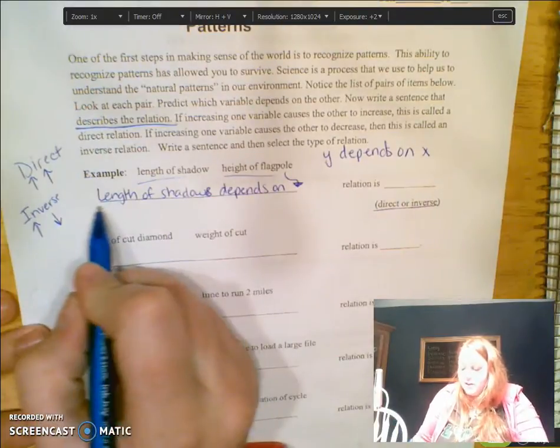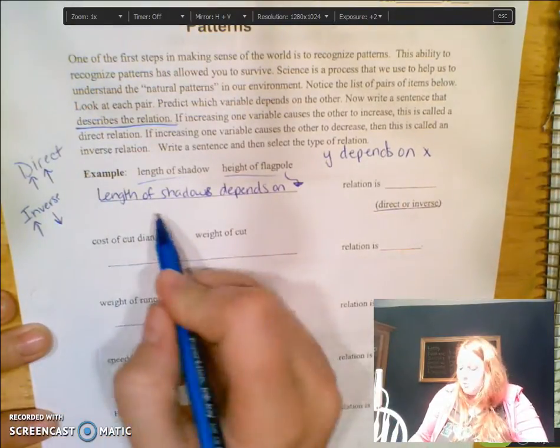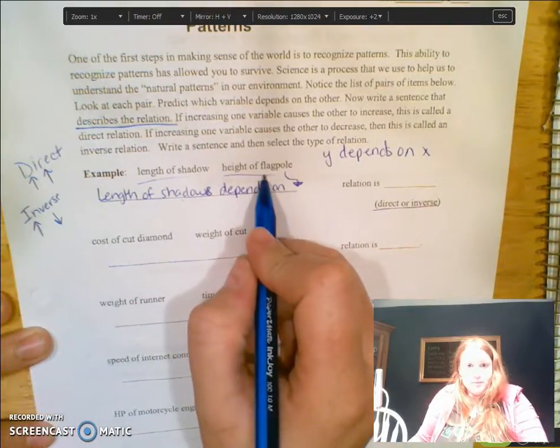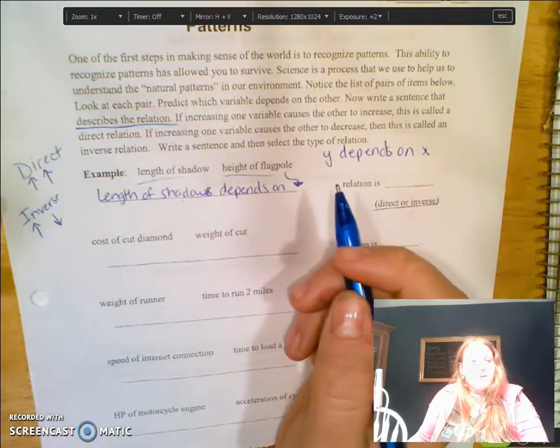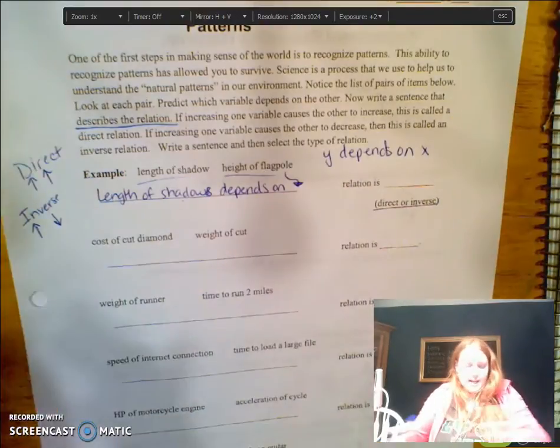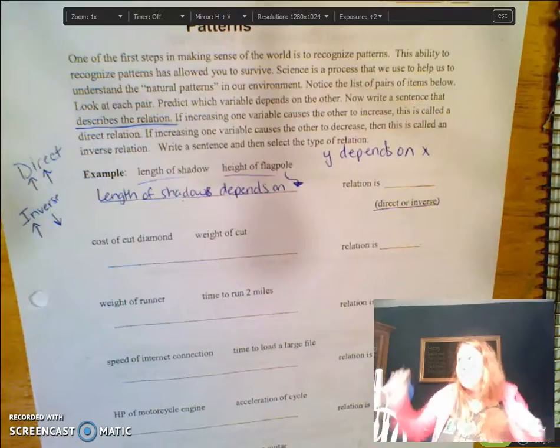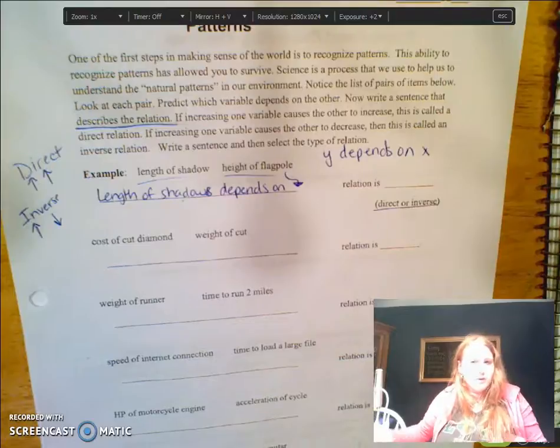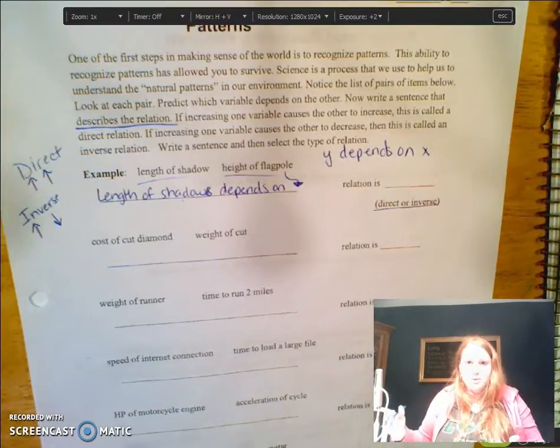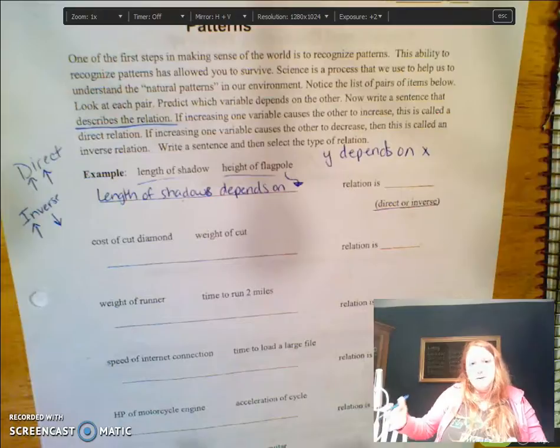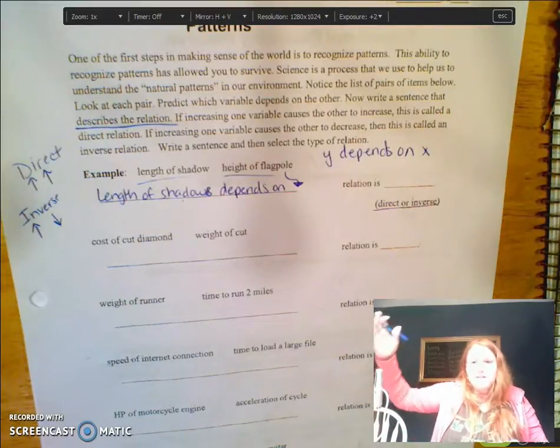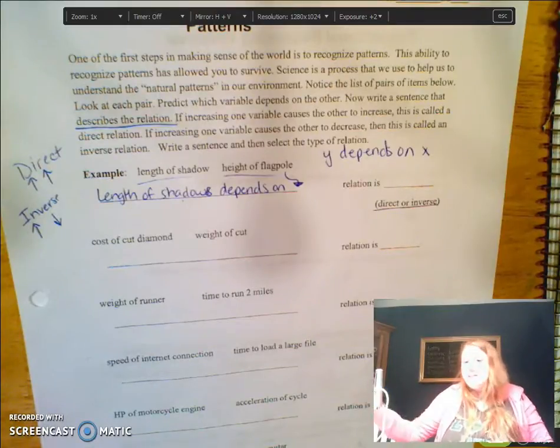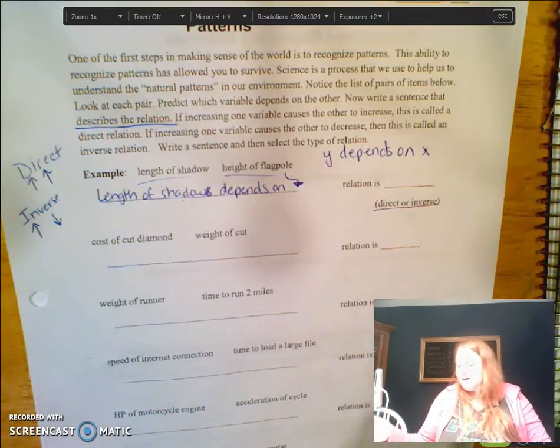So I've gone ahead and done this first example for you. We know the length of the shadow depends on the height of the flagpole—that's pretty simple. I can't create some shadow and then a flagpole is going to adjust to that shadow. No, the way it naturally works is if you have a 20-foot flagpole, then you're going to have a larger shadow than a 10-foot flagpole.